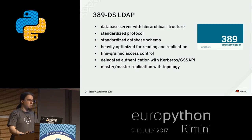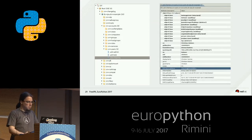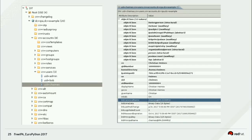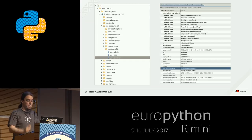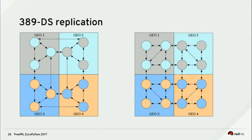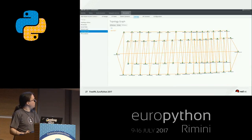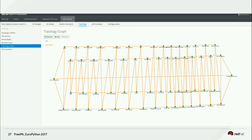LDAP supports master-master replication with a replication topology. You'd typically run two, three, five, or ten servers across data centers, creating replication agreements to distribute data and load. It scales very nicely — we've done a performance test with 60 servers. Apache Directory Studio shows the LDAP tree on the left and leaf node details on the right.